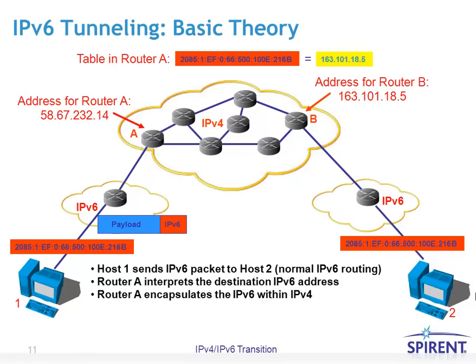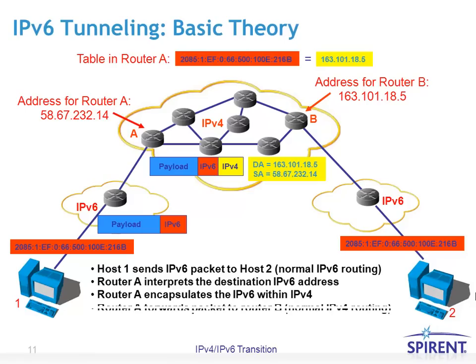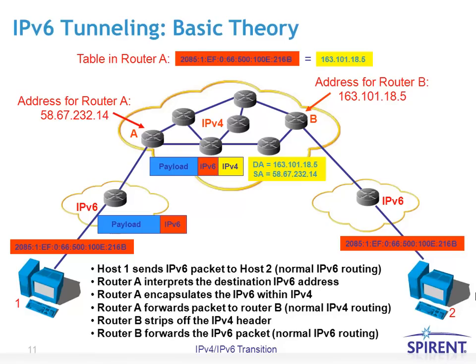Router A encapsulates the IPv6 packet within an IPv4 packet. The original IPv6 header and payload are encapsulated inside the IPv4 packet, with the source and destination IPv4 addresses being the tunnel endpoints of routers A and B respectively. The packet follows normal IPv4 routing through the IPv4 internet. Router B receives the packet, strips off the IPv4 header, and the original IPv6 packet payload is forwarded on to the IPv6 links that device 2 is connected to, following normal IPv6 routing.